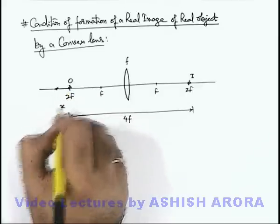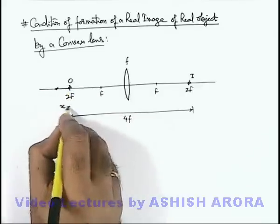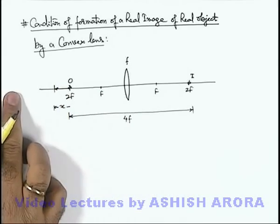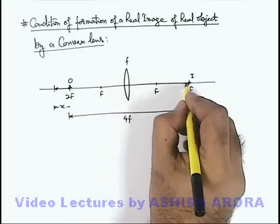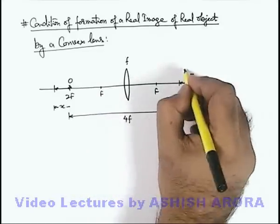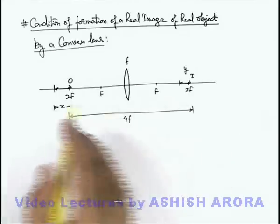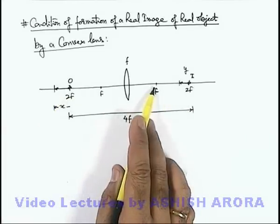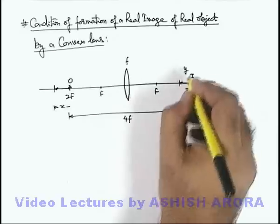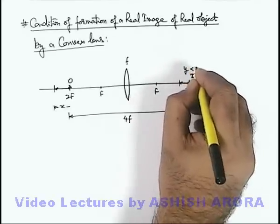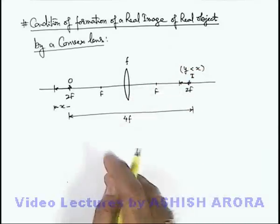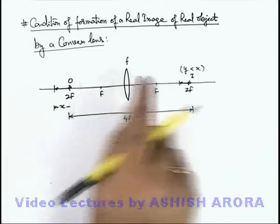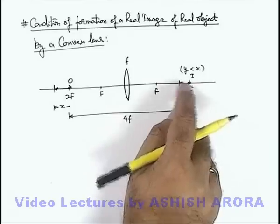If the object is displaced toward the left by distance x — that is, toward infinity — the image will also displace toward the left by a distance y. But as the object reaches infinity, the image reaches the focal point. So we can directly write that the magnitude of y will be less than x.